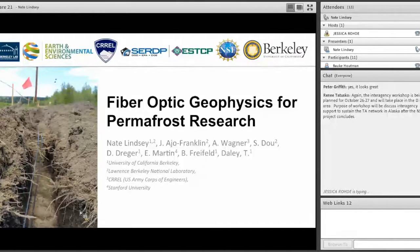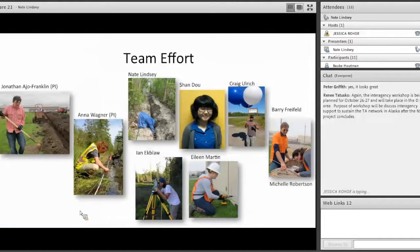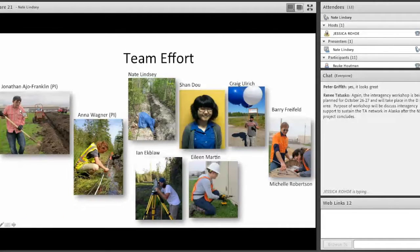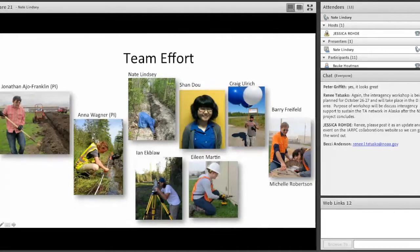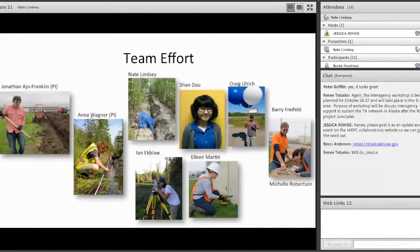This project would not happen without a really great team behind me, so I want to underscore the collaboration between LBNL and CREL, the Cold Regions Research Environmental Engineering Laboratory up in Fairbanks. My PI is Jonathan Ahu Franklin at the lab, and Anna Wagner at CREL is the PI. Their joint proposal to DOD CERTIP has led to this project, which is basically to test and demonstrate fiber optic tools and technology to study changes in permafrost.